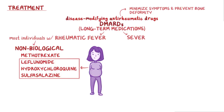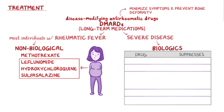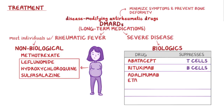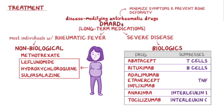Individuals with severe disease get biological DMARDs, also called biologics, all of which suppress some part of the immune system. For example, abatacept suppresses T cells and rituximab suppresses B cells. Some block chemokines; for example, adalimumab, etanercept, and infliximab all inhibit tumor necrosis factor, or TNF. Anakinra blocks interleukin-1, and tocilizumab blocks interleukin-6.